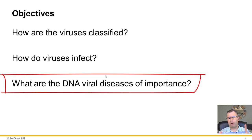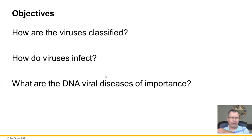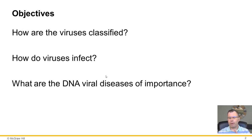We'll look at the pox viruses, the herpes viruses, hepatitis B virus — which is specifically a DNA virus. The other hepatitis viruses — A and C, and also D and E — are all RNA viruses. I'll mention those today, but we'll talk more in the next lecture. The last group will be non-envelope viruses including adenovirus, papillomavirus, and parvovirus.